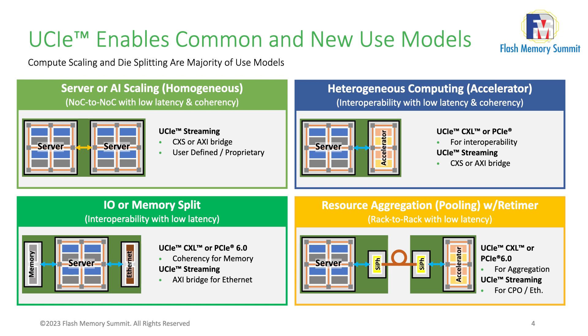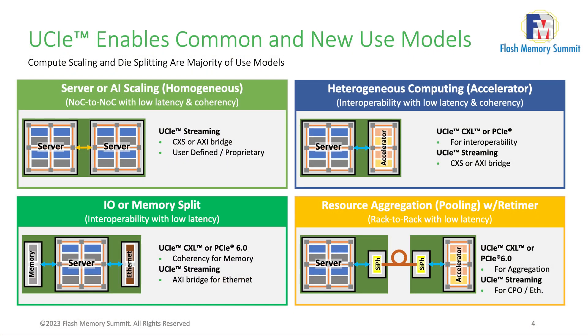Functional splitting is another use case we see very commonly being used in the industry, with a high speed of adoption. The idea is that by moving some functionality into other dies, you can select the appropriate process node for each die, and also manage your portfolio in a better way. So it's again about flexibility and cost. Heterogeneous computing — or aggregation of dies — is yet another interesting use case we see across many industry engagements.